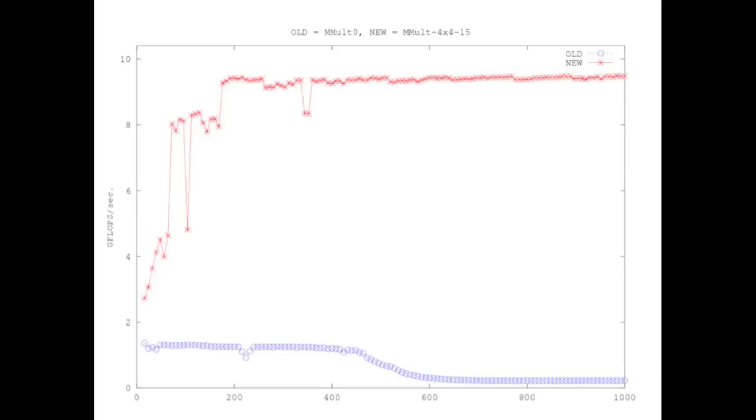You get to that number by looking at the clock rate of the processor in cycles per second, and then multiplying that times the number of floating point operations that this processor can perform per cycle.